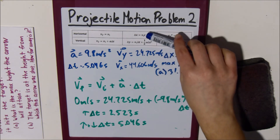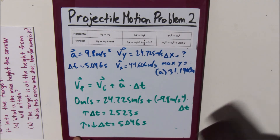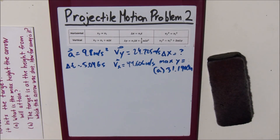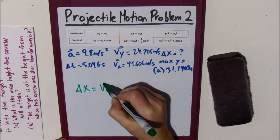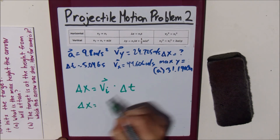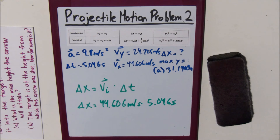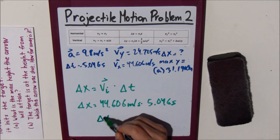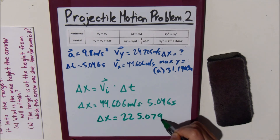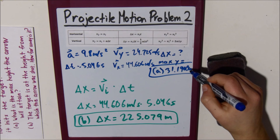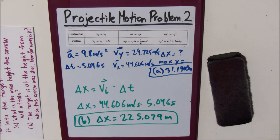Finally, we plug in the horizontal initial velocity and the total time to find delta x. Delta x = v_initial × Δt = 44.606 m/s × 5.046 s, which gives delta x = 225.079 meters. So the answer to part B is 225.079 meters, and the answer to part A — the max height — was 31.108 meters. This type of problem is a little harder than the last, but if you follow these steps, everything will be okay.